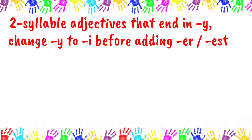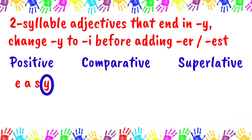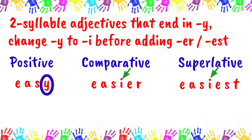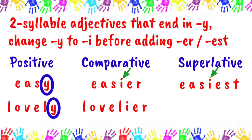Next rule: for two-syllable adjectives that end in Y, change Y to I before adding ER to their comparative forms and EST to their superlative forms. For example: easy, easier, easiest; lovely, lovelier, loveliest.